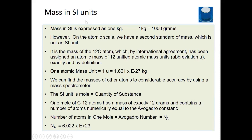The third important standard is mass. In SI units, mass is expressed in kilograms. On the atomic scale, a second standard is the mass of the carbon-12 atom, which by international agreement has been assigned an atomic mass of 12 unified atomic mass units. One atomic mass unit is 1/12th of the carbon-12 mass, equal to 1.66 × 10⁻²⁷ kg. Masses of other atoms can be determined using mass spectrometers and compared with the carbon atom.